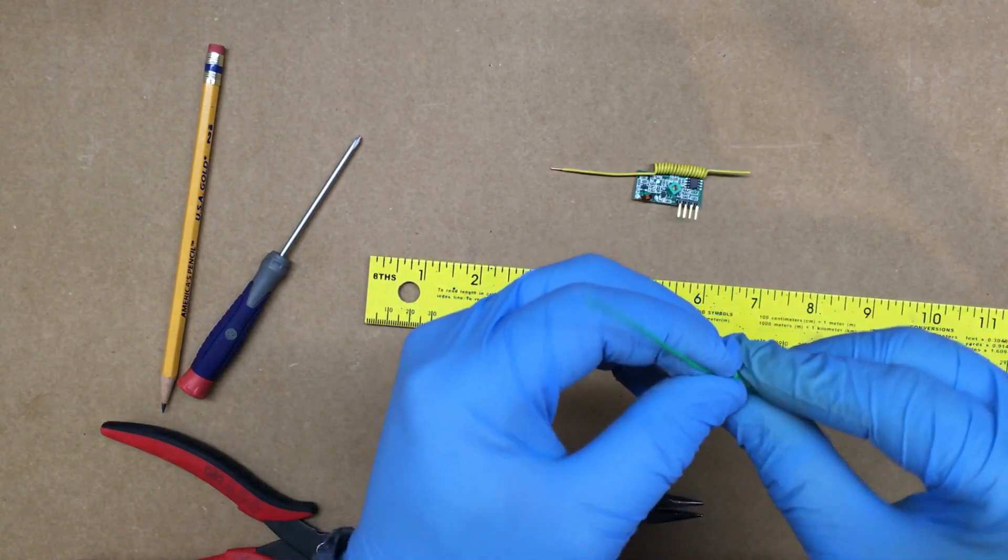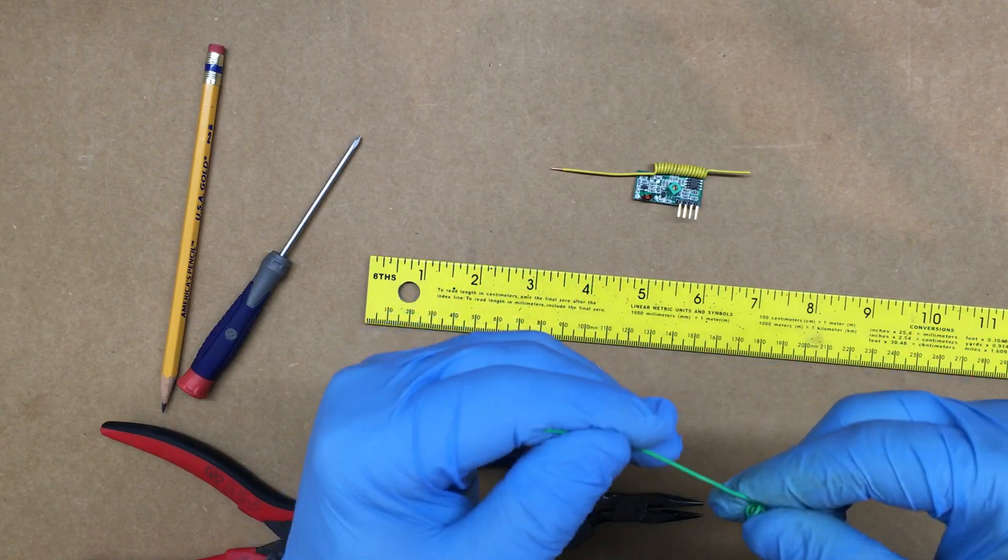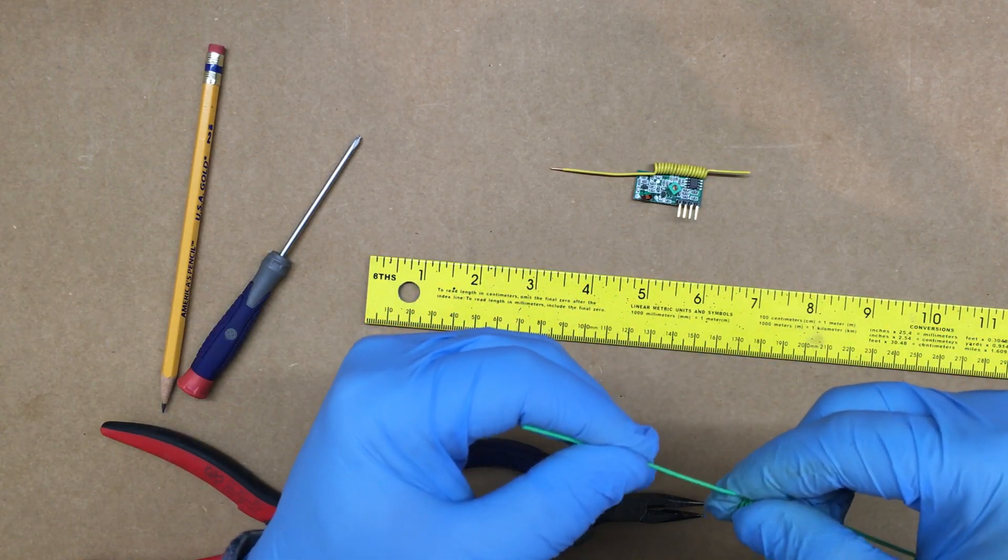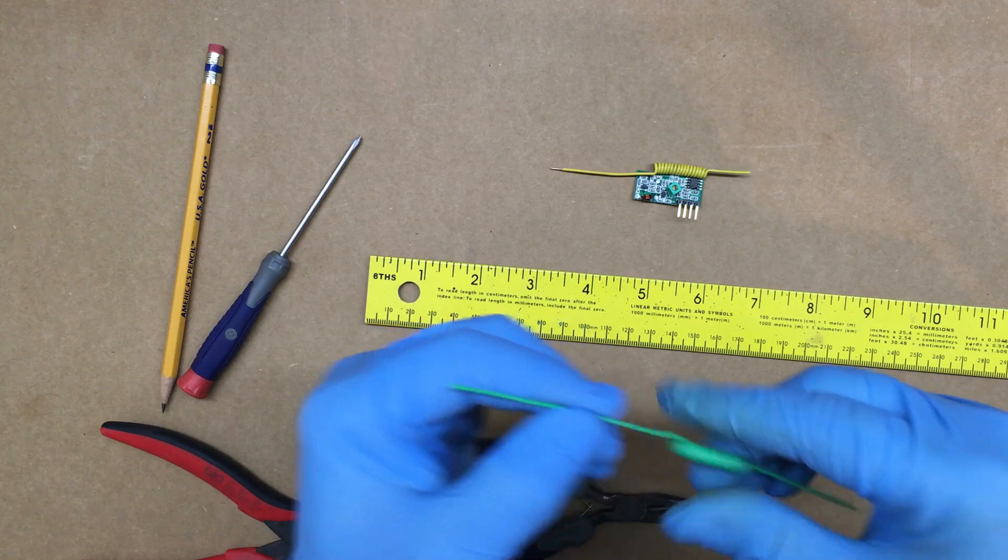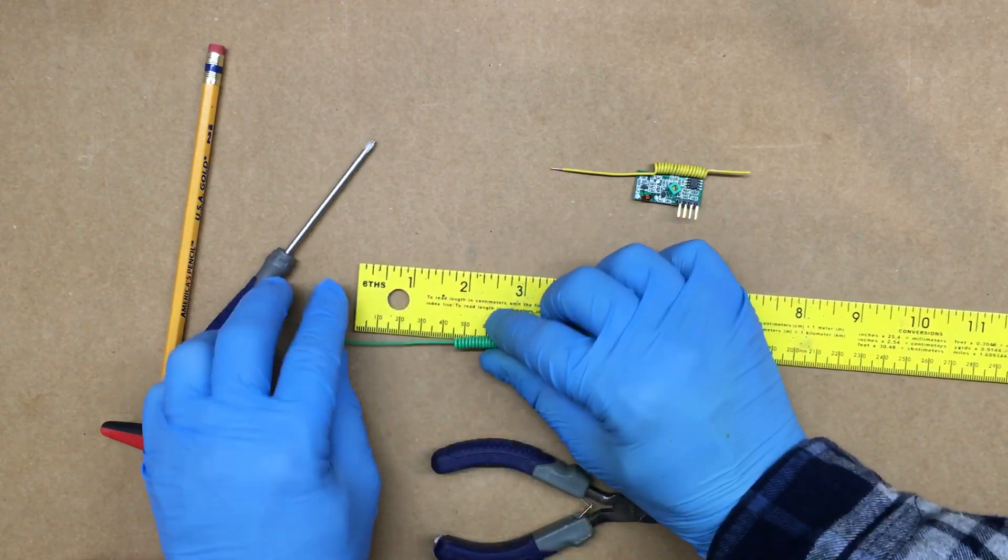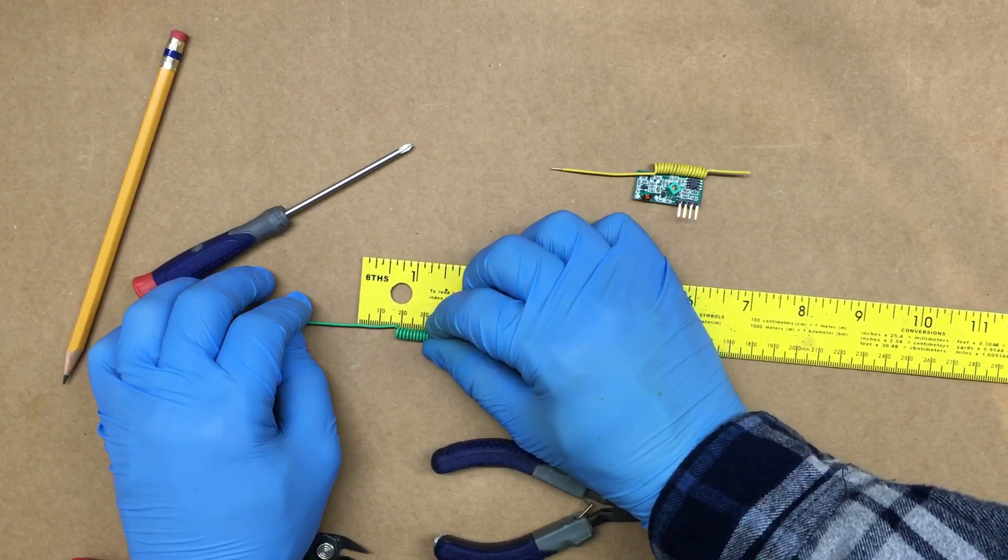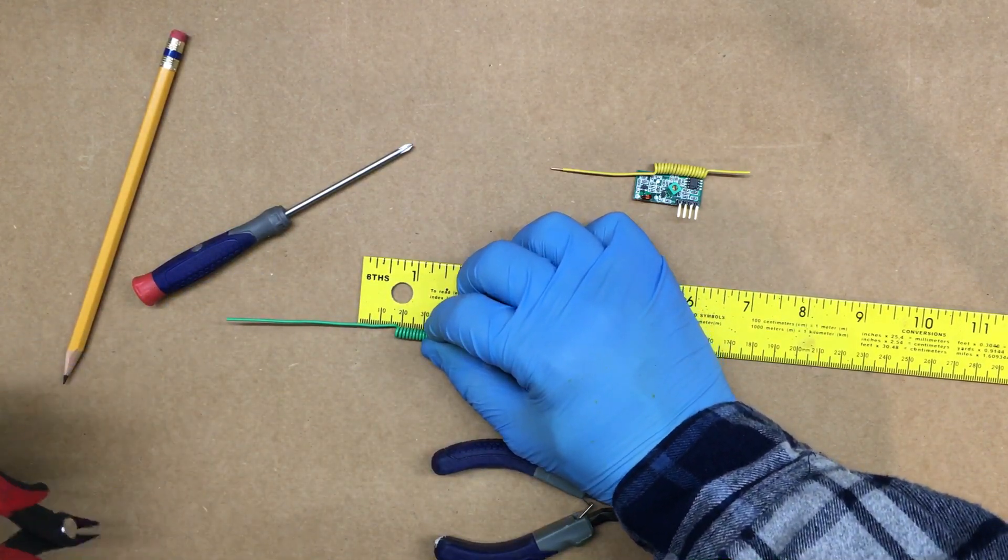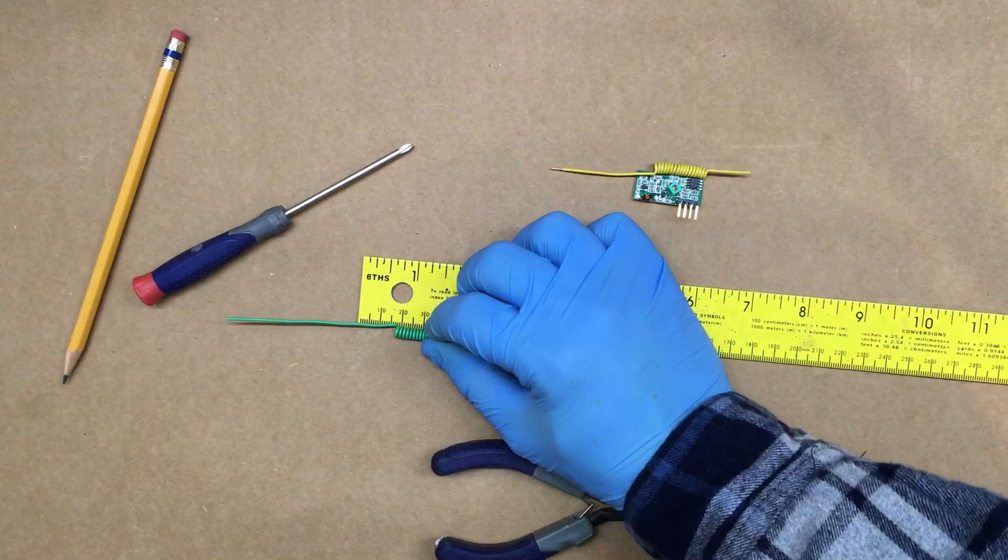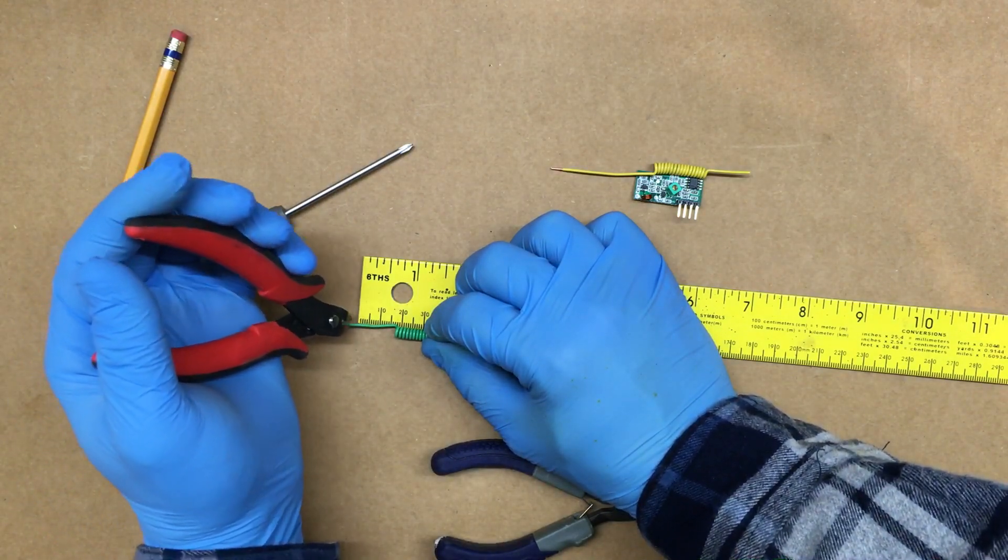Then this one here is going to be 17 millimeters, so we're just going to put it about right there, then just use a pair of dikes or snips and cut it off.